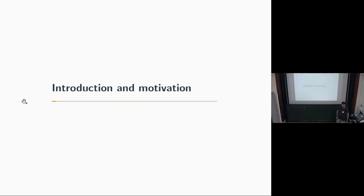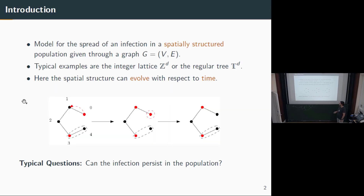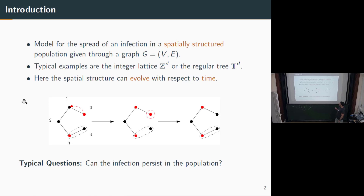Let me first give some introduction and motivation. As you've already heard today, the contact process is a model — one application being to model an infection in a spatially structured population. The structure comes from an underlying graph G. We are normally considering integer lattices or a regular tree, working on infinite graphs, not finite graphs.